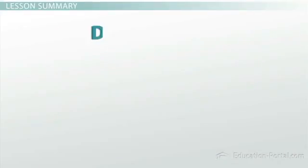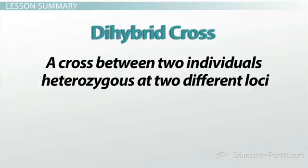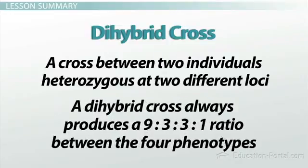So, in summary, a dihybrid cross is a cross between individuals that are heterozygous at two different loci. A dihybrid cross produces a 9 to 3 to 3 to 1 ratio between the four different phenotypes.